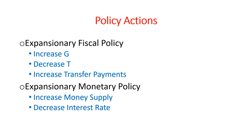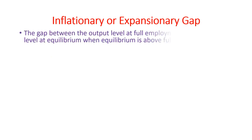Now the inflationary or expansionary gap. The inflationary or expansionary gap represents the gap between the output level at full employment and the output level at equilibrium when equilibrium is above full employment. It happens when at the full employment level, aggregate demand is greater than aggregate supply.